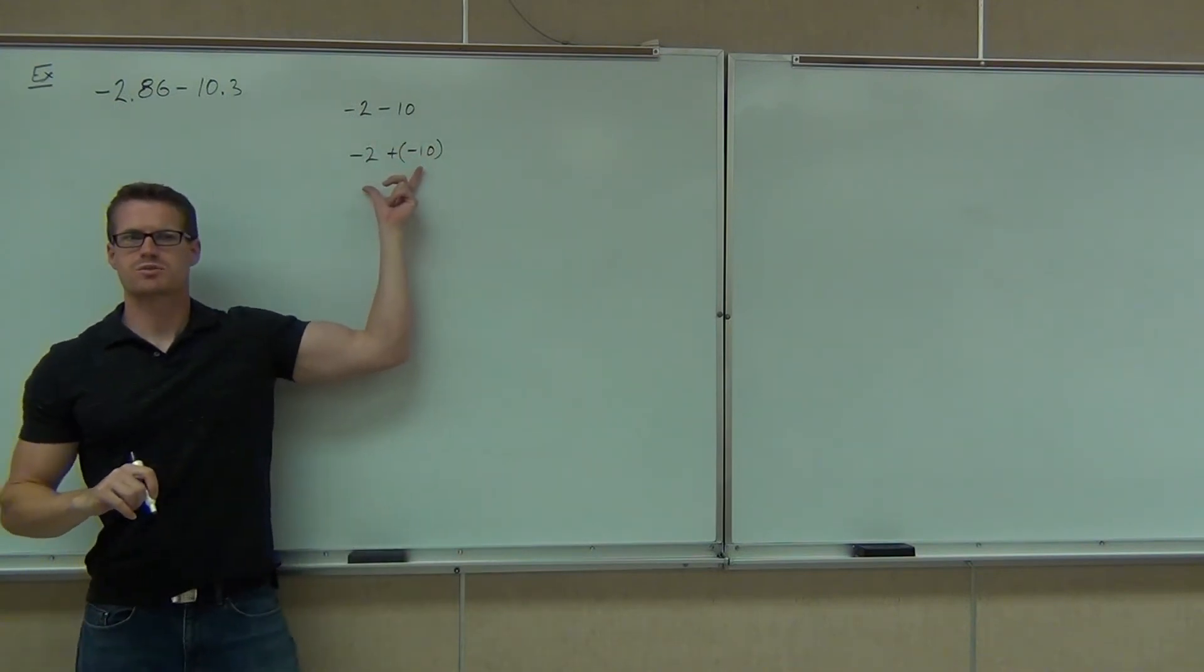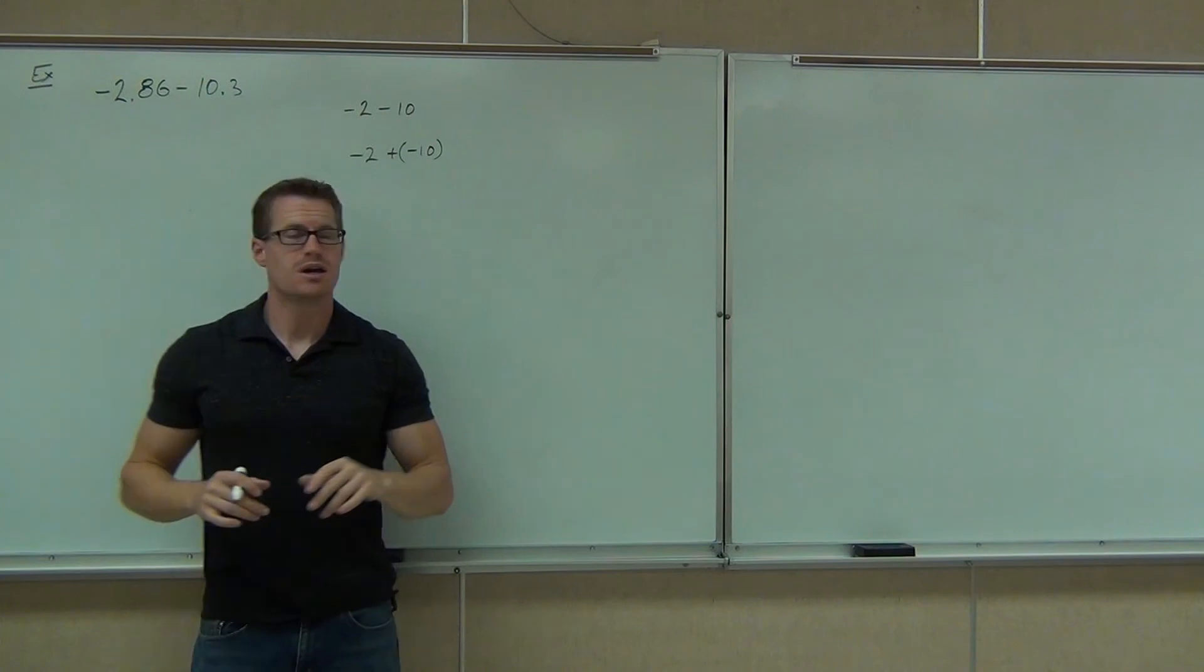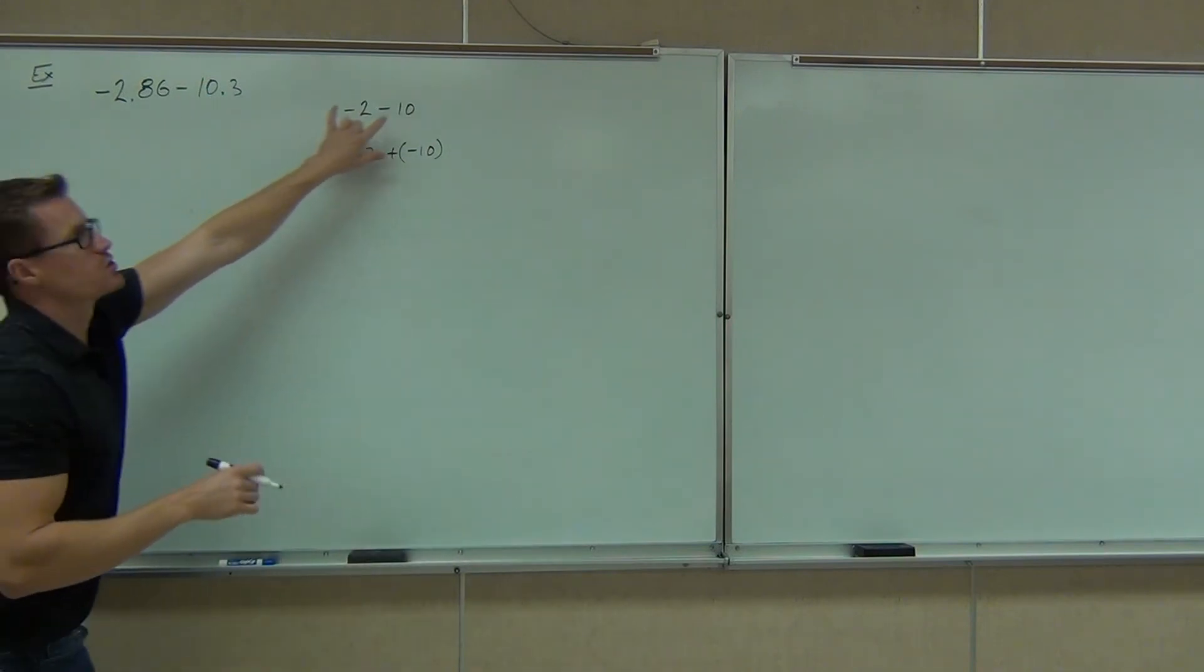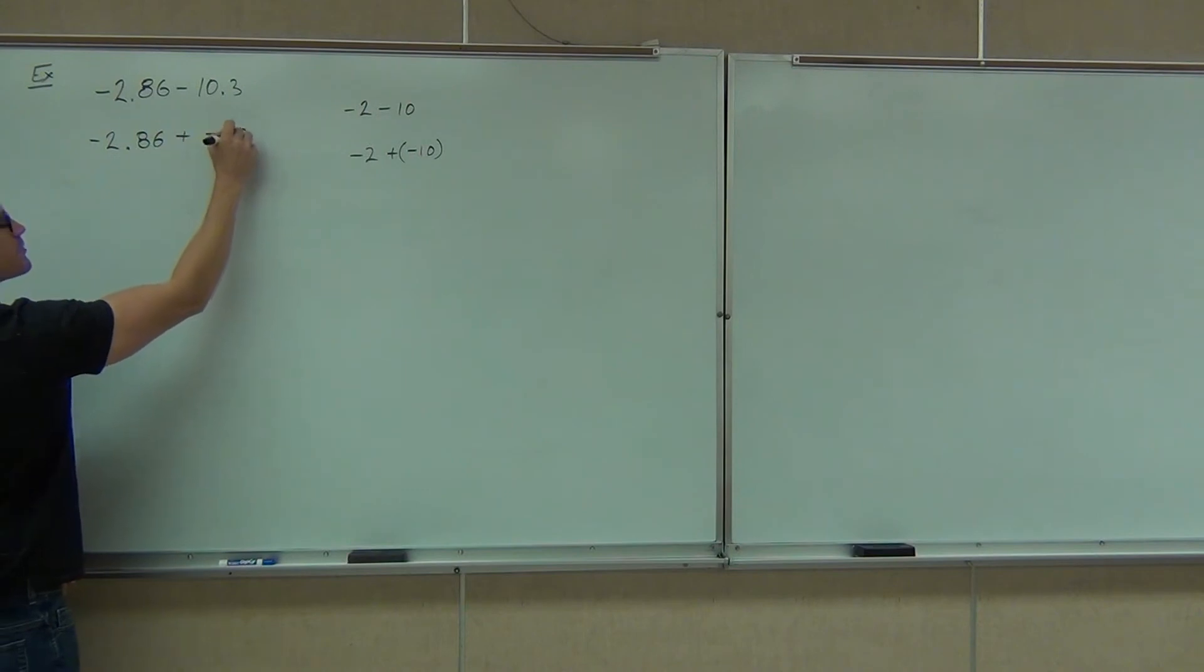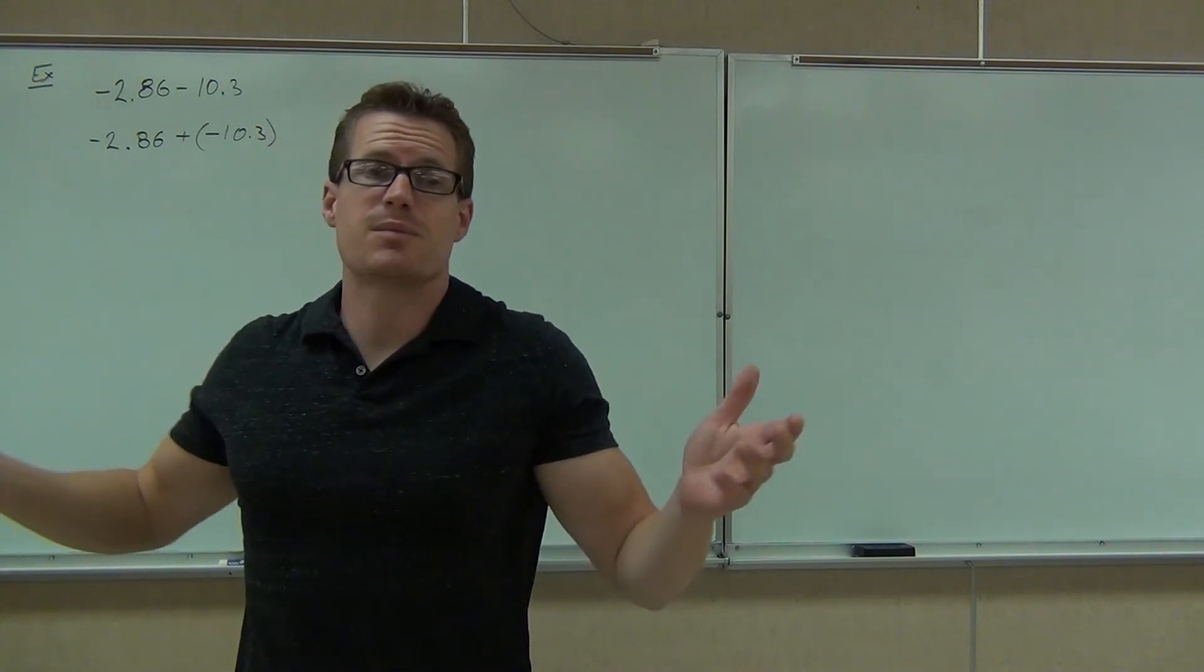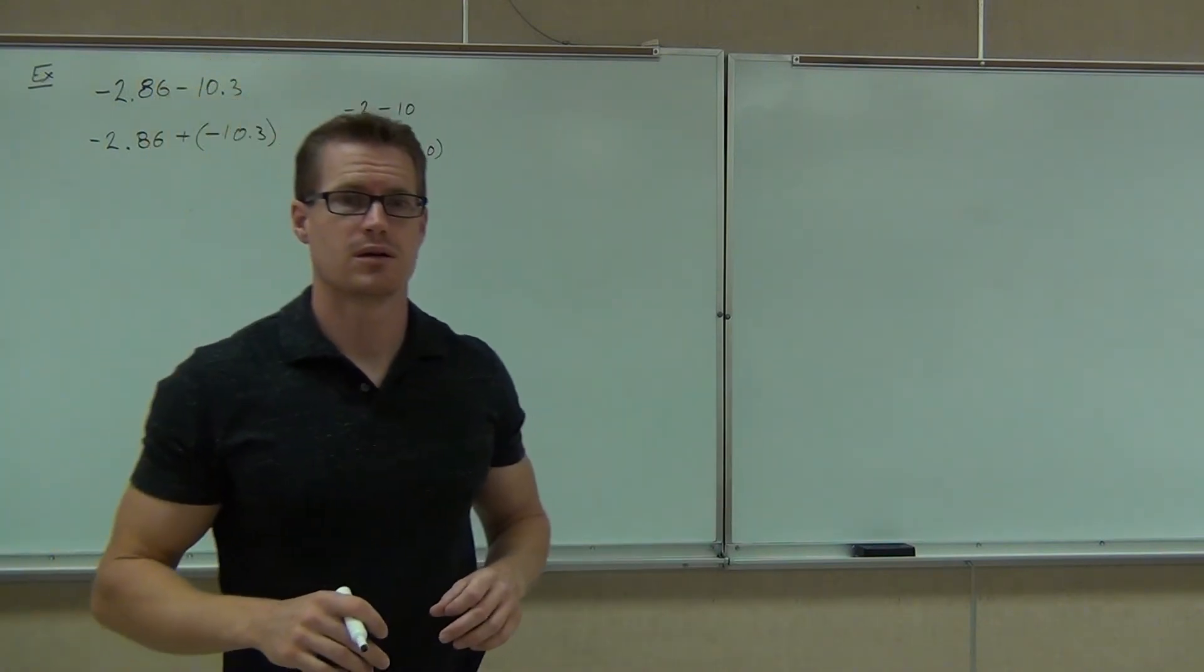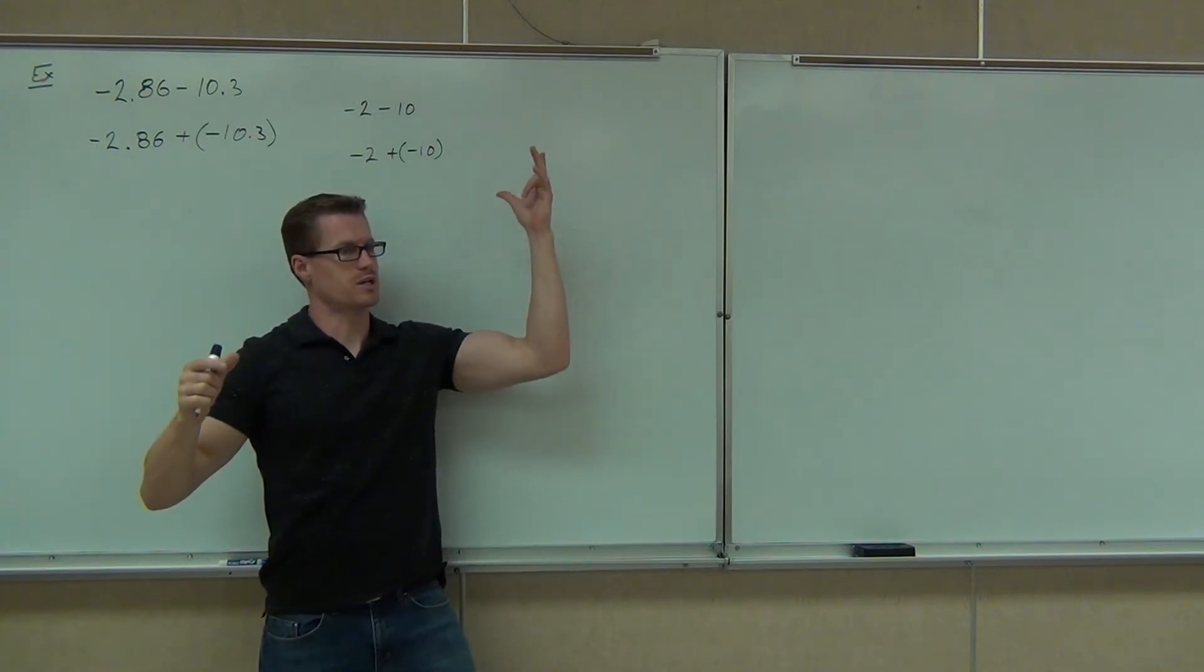For instance, if you could do negative 2 minus 10 and write that as negative 2 plus negative 10. Do you remember doing that? What would you do with those two numbers? Add them or subtract them? Add them. And then you'd keep the common sign. Yeah, we'd do that. We're going to do the same thing here. You see, instead of having negative 2 and negative 10, we have negative 2.86 minus 10.3. We can still write that as negative 2.86 plus negative 10.3. Do you guys see the similarity between those two problems? Are the signs the same or different? Same. They're still the same. Are you going to add them or subtract them? Add them. Exactly what we talked about doing here.